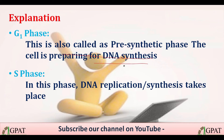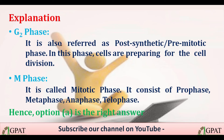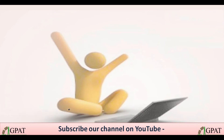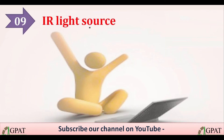G1 phase is the pre-synthetic phase where the cell prepares for DNA synthesis. S phase is where DNA replication and synthesis takes place. G2 phase is the post-synthetic/post-mitotic phase where cells prepare for division. M phase (mitotic phase) consists of prophase, metaphase, anaphase, and telophase. Option A is the correct answer.